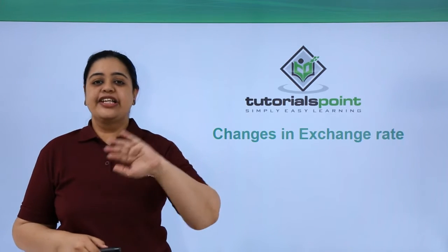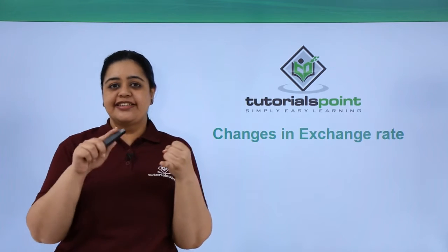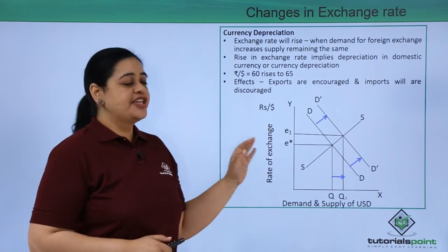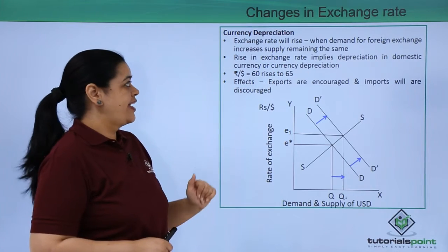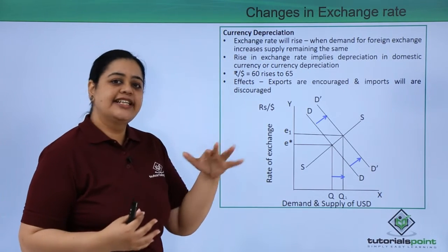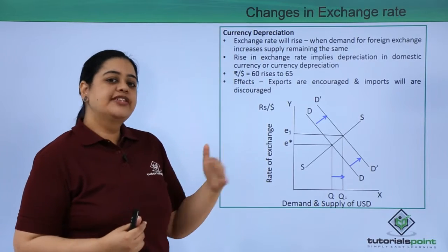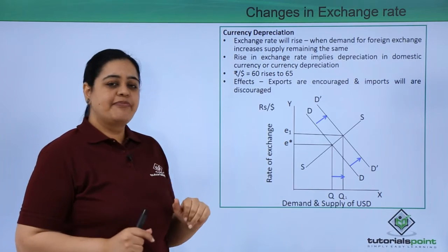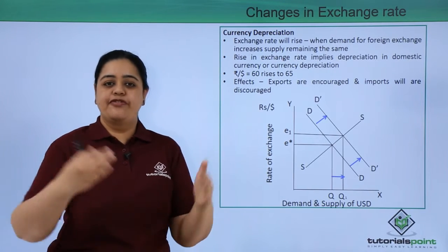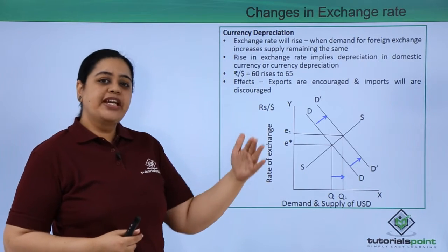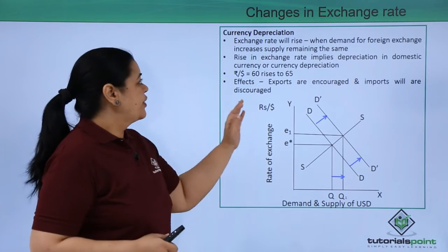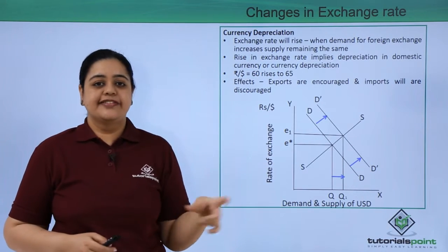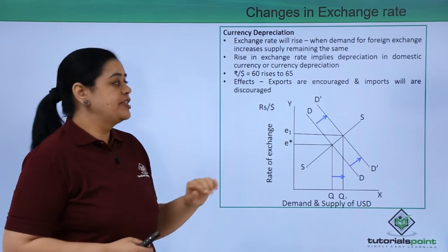Let us quickly understand when there are changes in exchange rate — when there is a depreciation or when there is an appreciation. When currency depreciation happens, that means your exchange rate will rise. So, there would be more demand of foreign exchange, let's say dollar to rupee. There is more demand of dollars, but the supply of dollars remains the same. Because the market forces come into play, my rupee will depreciate. So, there would be a rise in exchange rate implying depreciation in domestic currency, or as we call it popularly, currency depreciation.